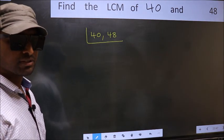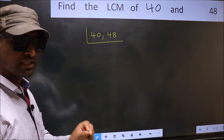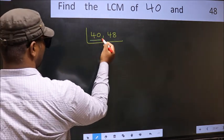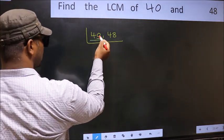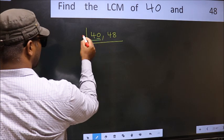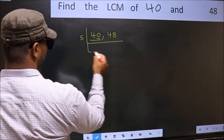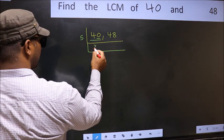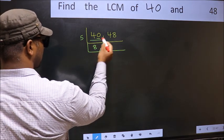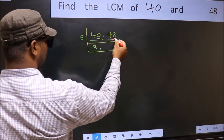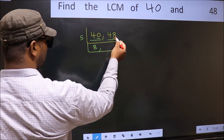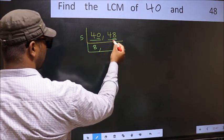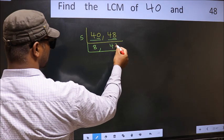Now focus onto the first number, which is 40. The last digit is 0, so directly take 5. When do we get 40 in the 5 table? 5 times 8 is 40. The other number is 48 — last digit is neither 0 nor 5, so it is not divisible by 5. So we write it down as it is.